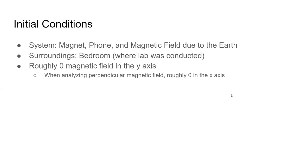So the system was the magnet, phone, and magnetic field due to the earth, and then the surroundings was my bedroom where the lab was conducted, with roughly zero magnetic field in the y-axis. And then when analyzed, perpendicular magnetic field is roughly zero on the x-axis. This was to ensure that the earth's magnetic field was not affecting the experiment.